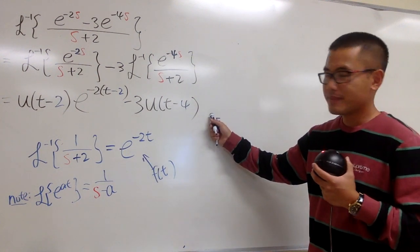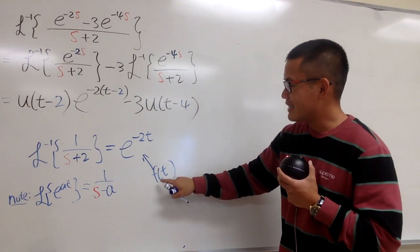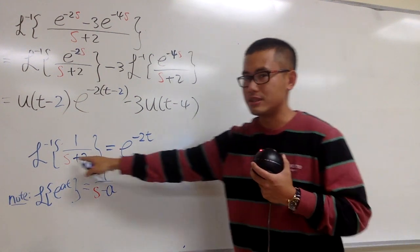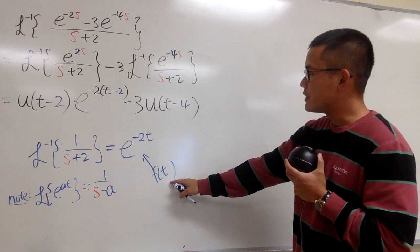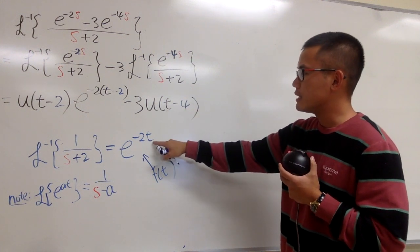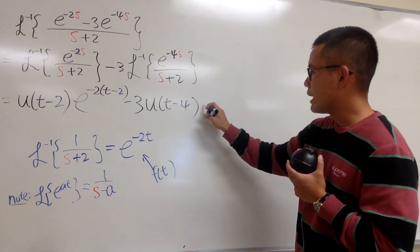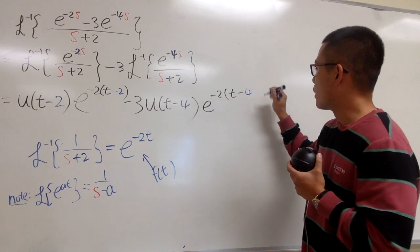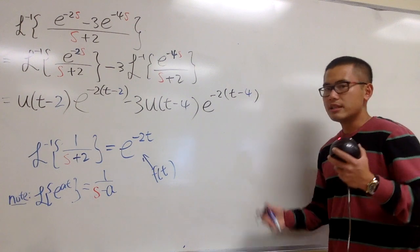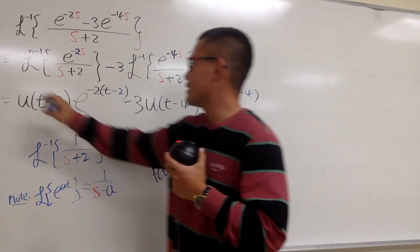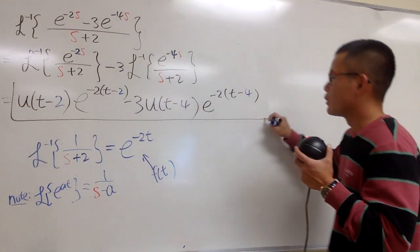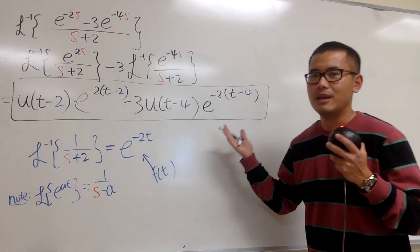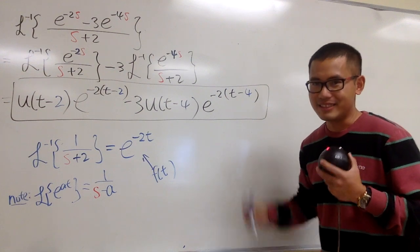For this one, you still have to look at the f of t, which is the same thing, 1 over s plus 2. You are going to substitute t minus 4 into this t. You are going to multiply e to the negative 2, parentheses, t minus 4. This is it, the rest is just distributing.